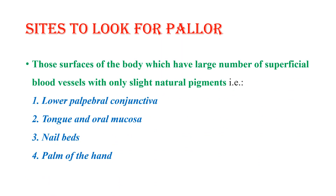When we look for the sites to check for pallor, the surfaces of the body which have large numbers of superficial blood vessels with only slight natural pigmentation — such as the lower palpebral conjunctiva, tongue and oral mucosa, nail beds, and palms of the hands — are the most common sites.